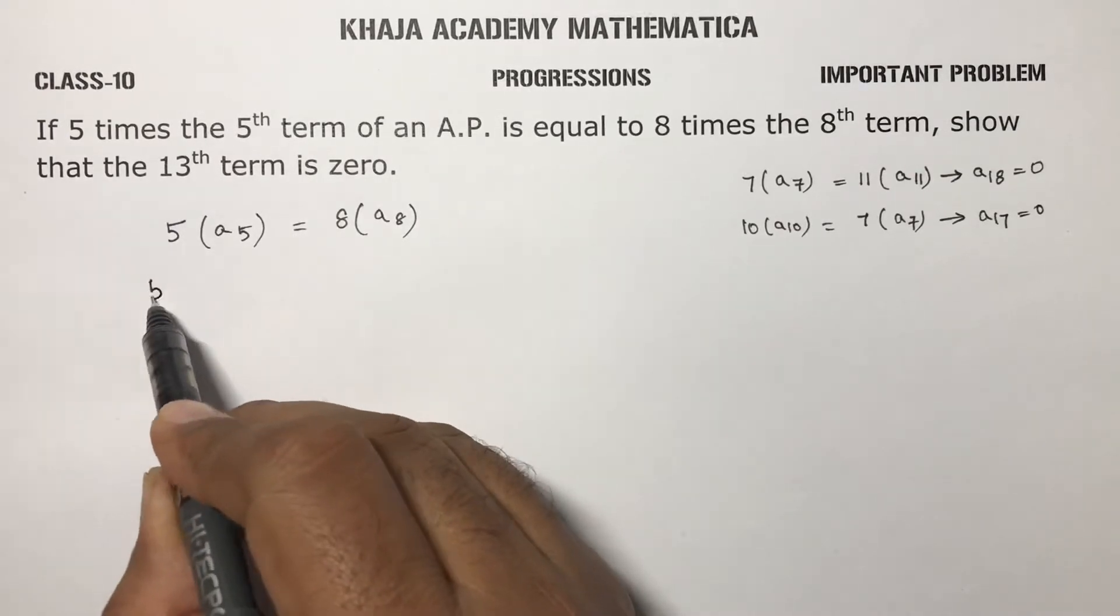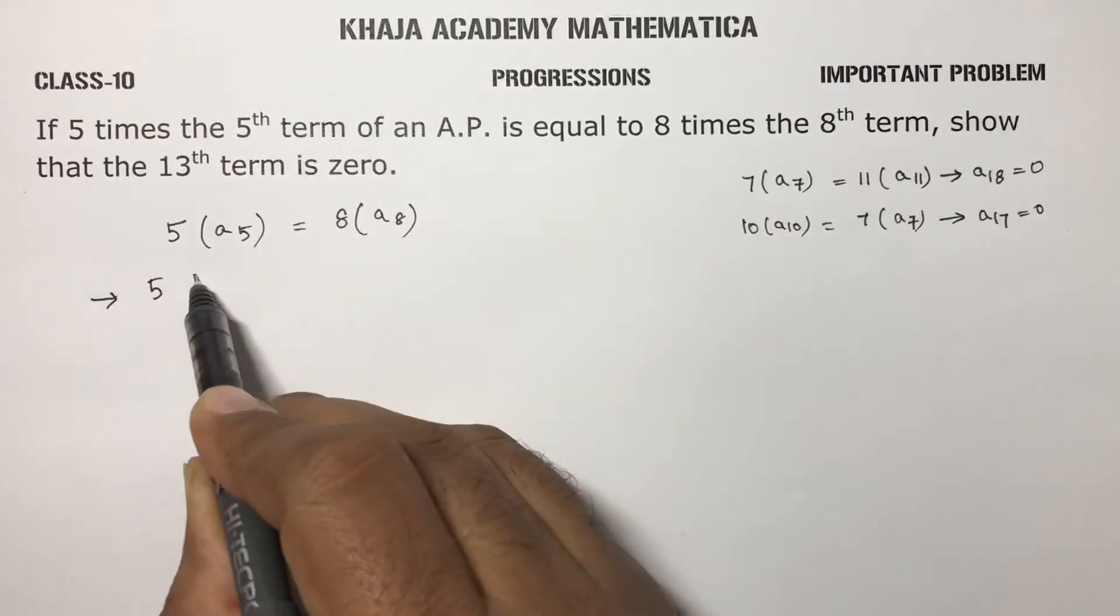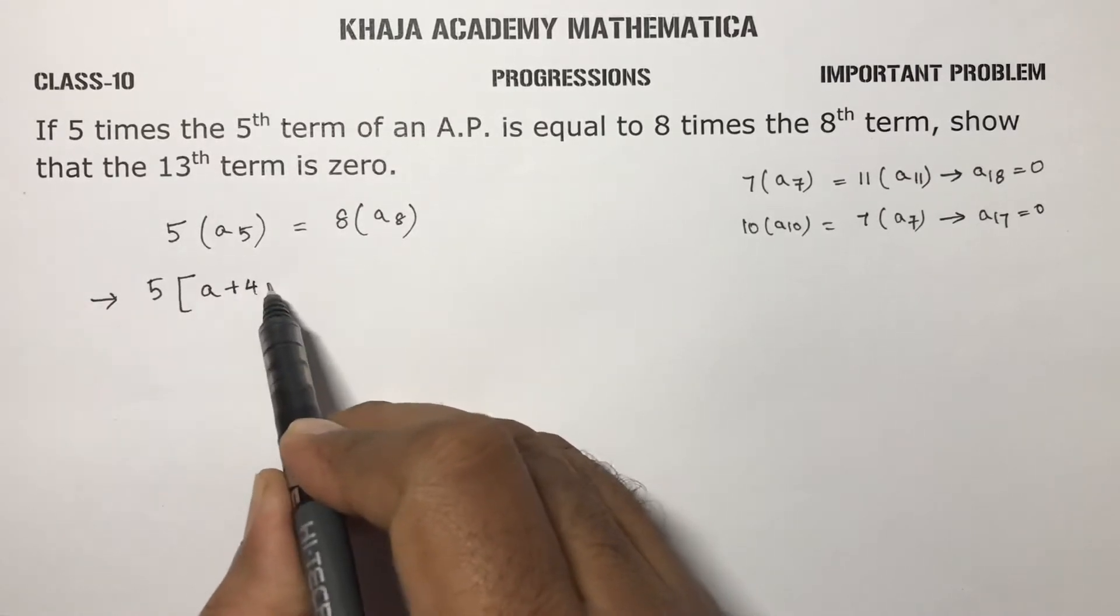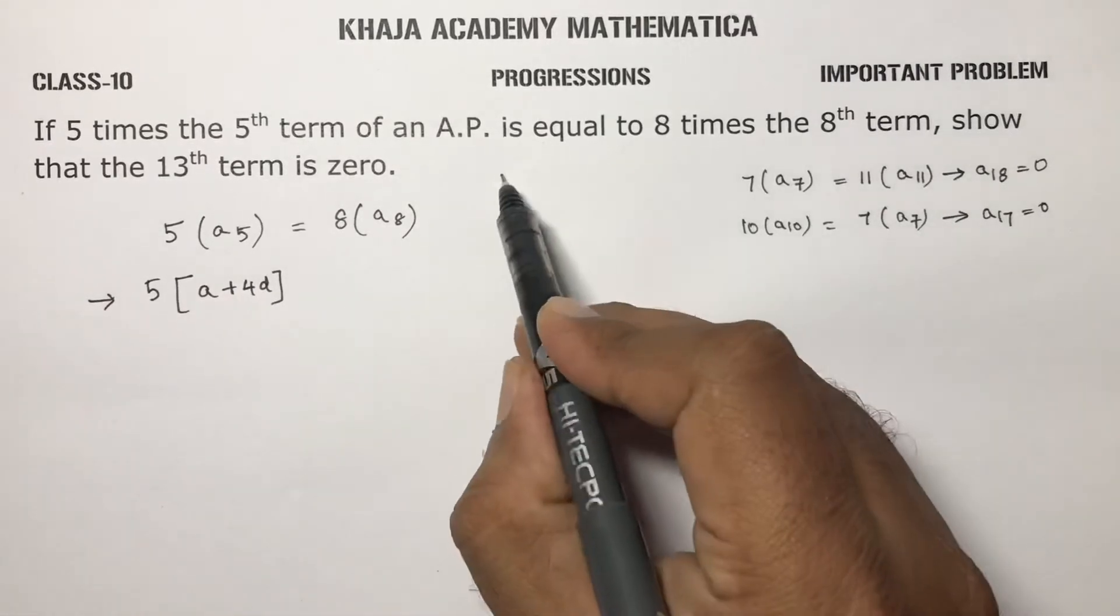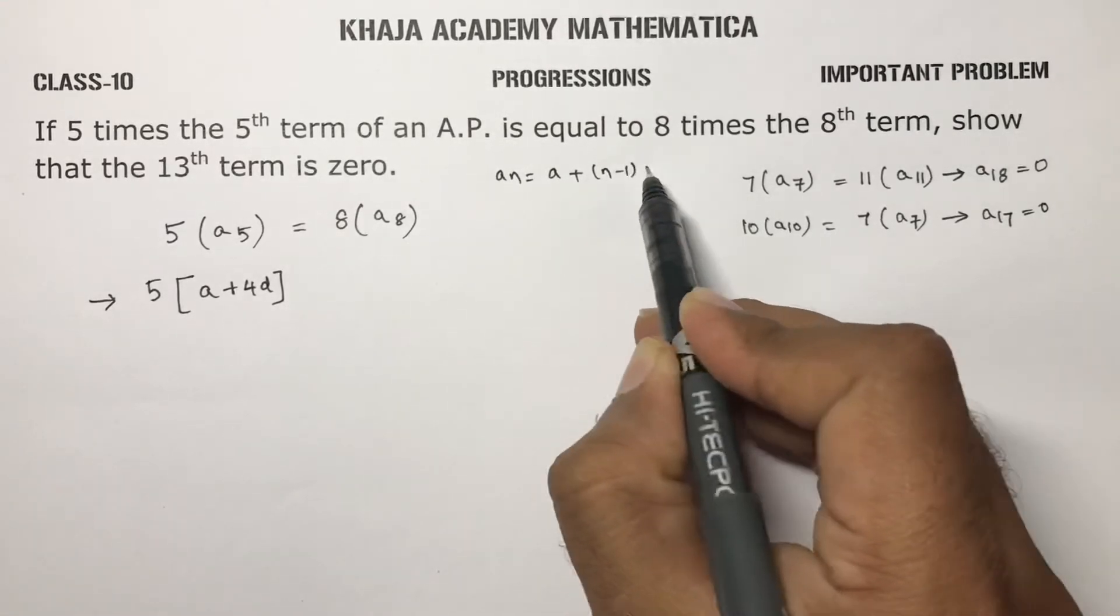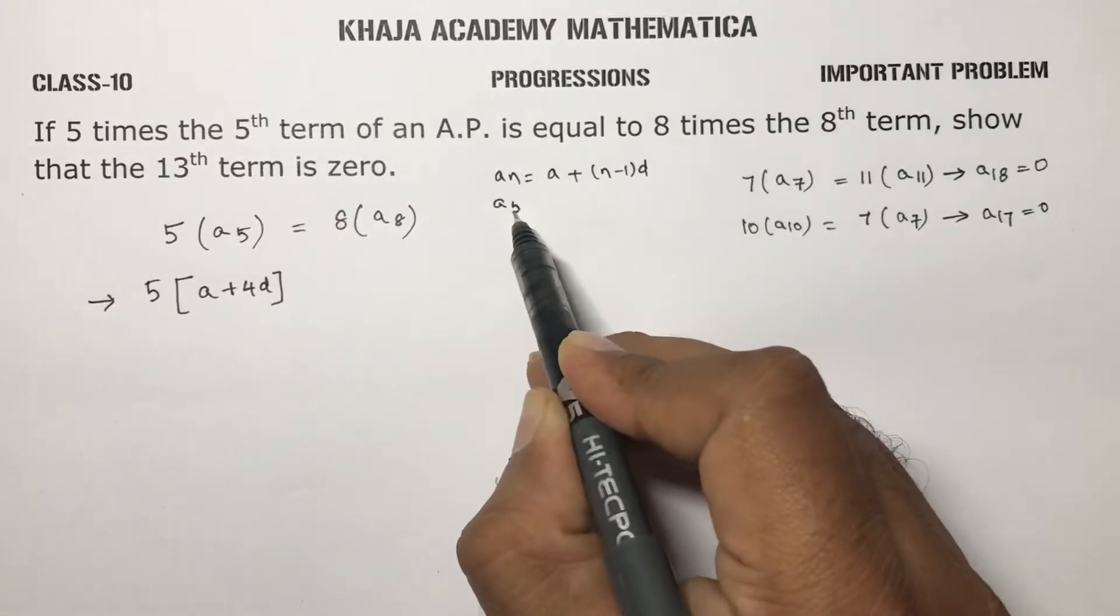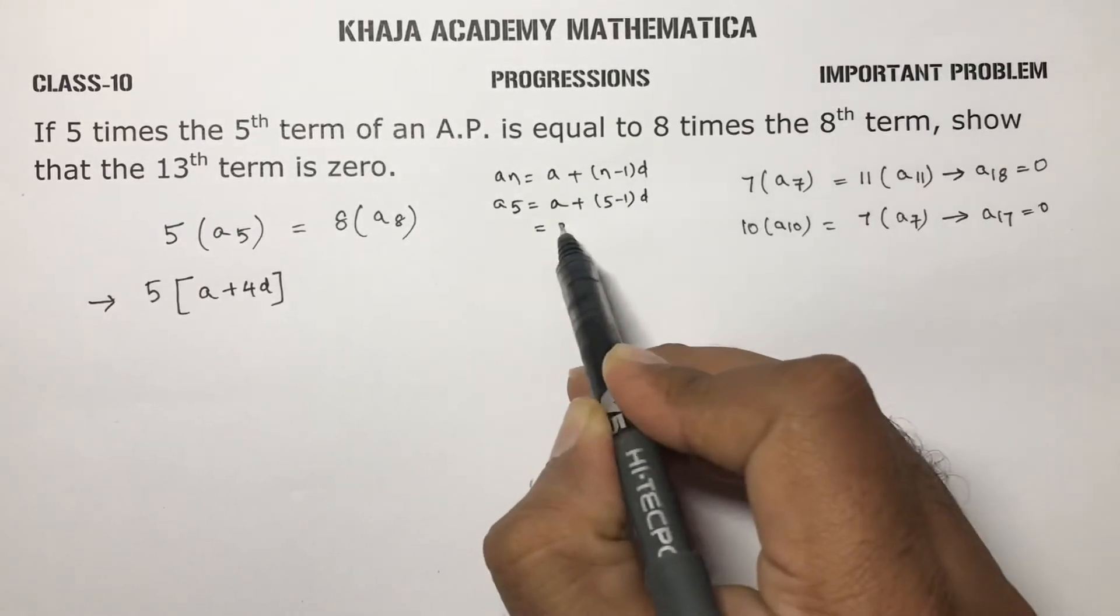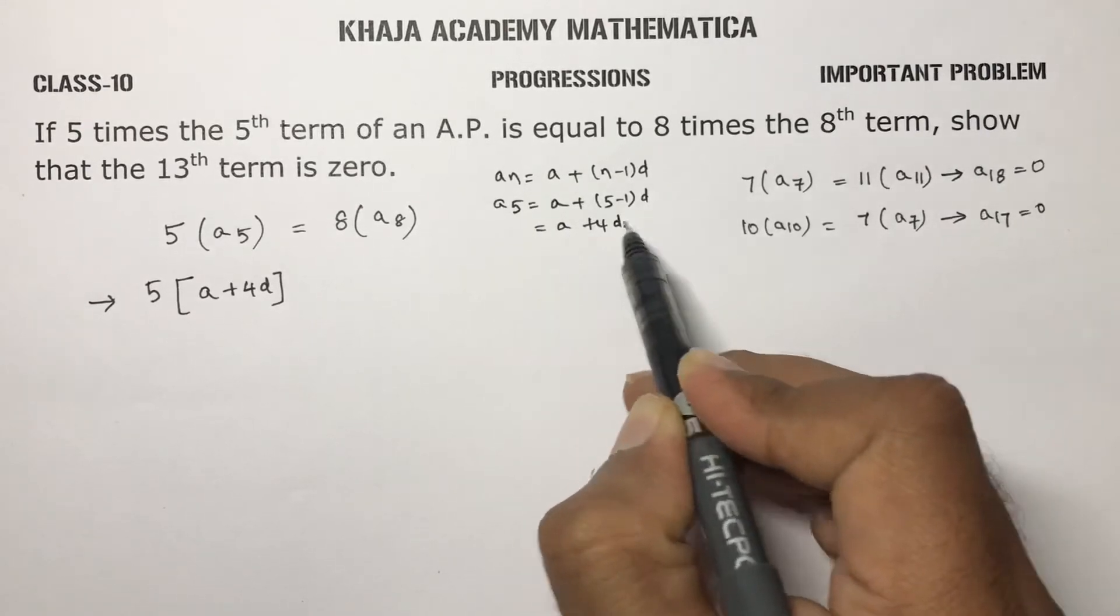So just let us simplify this. 5 times the 5th term. The 5th term is A plus 4D. Because AN formula is A plus N minus 1 into D. So A5 will become A plus 5 minus 1 into D. That is A plus 4D.